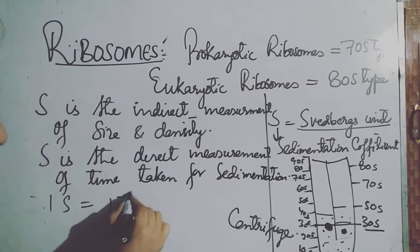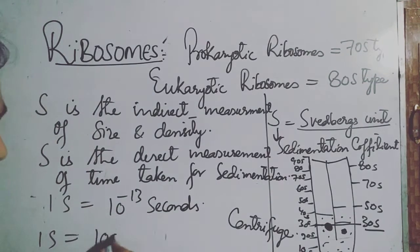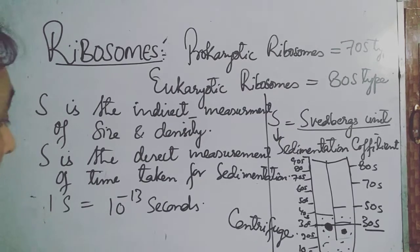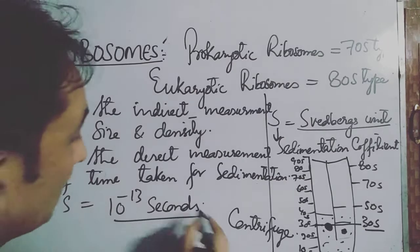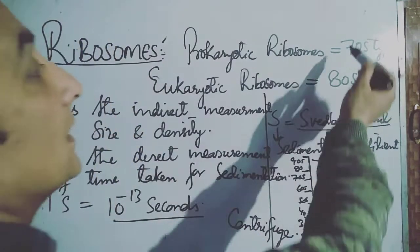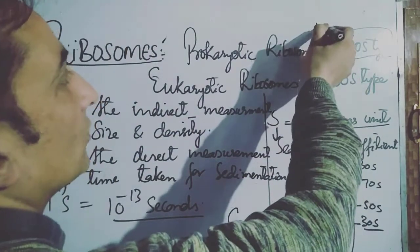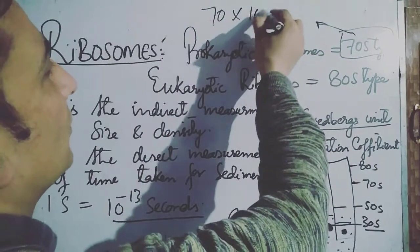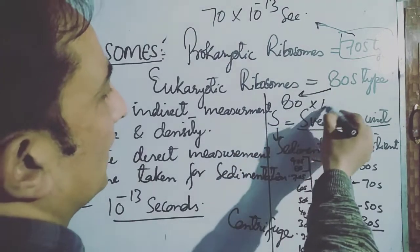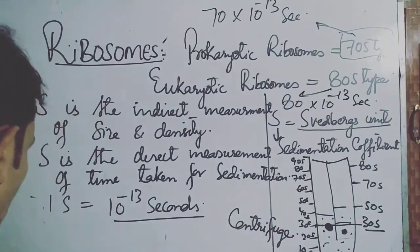The value of S: 1S is equal to 10 raised to the power of minus 13 seconds. So the prokaryotic ribosome sediments at the 70S level, giving a sedimentation coefficient of 70, which equals 70 × 10⁻¹³ seconds. Similarly, the eukaryotic ribosome has a sedimentation coefficient of 80S, that is 80 × 10⁻¹³ seconds.